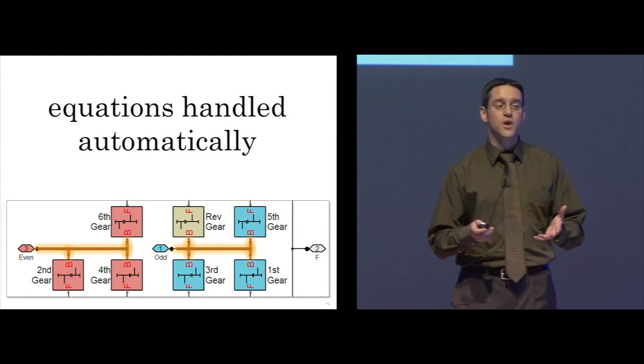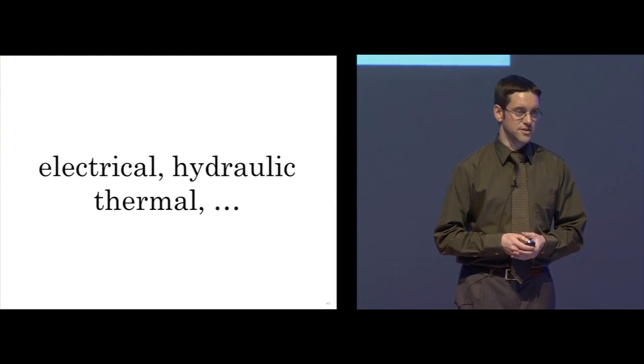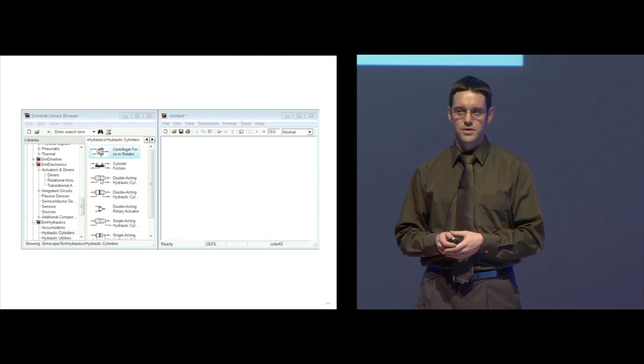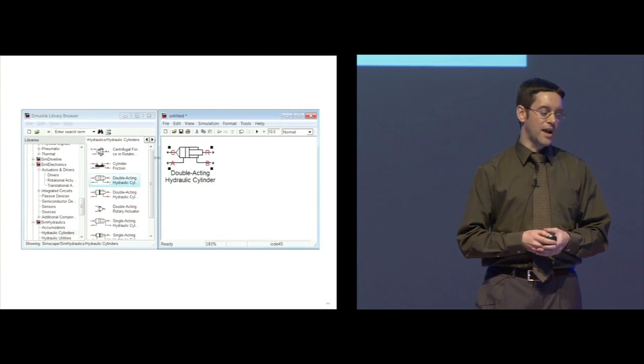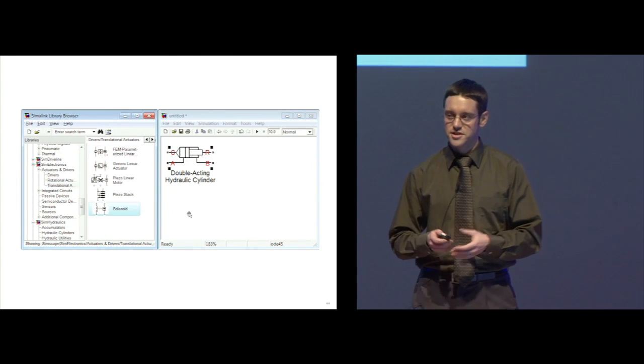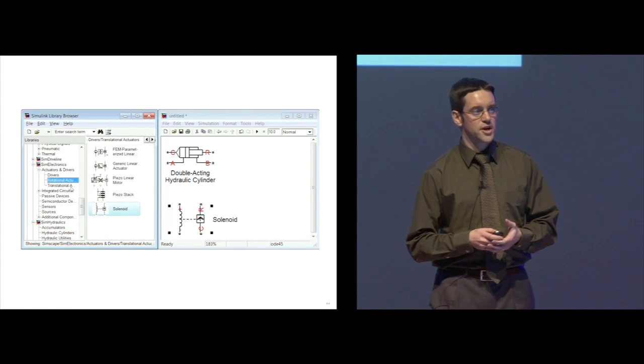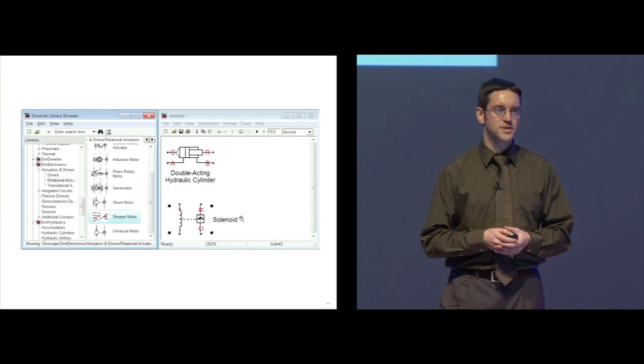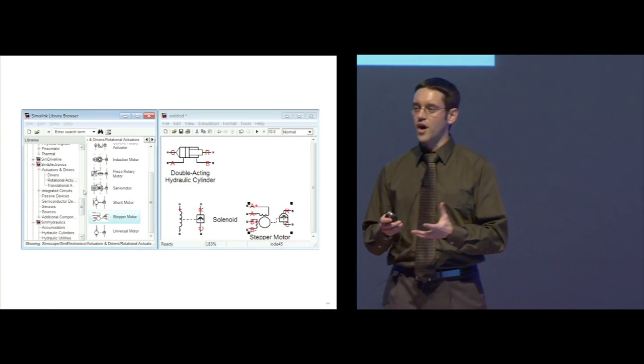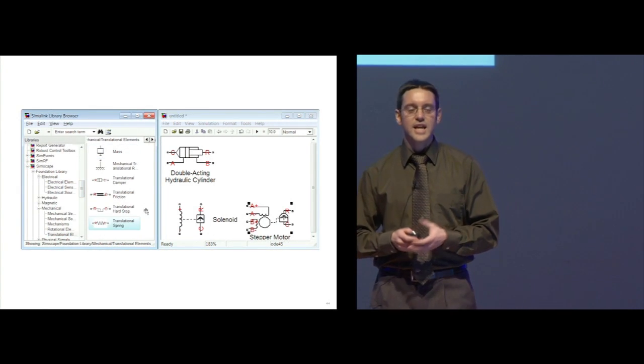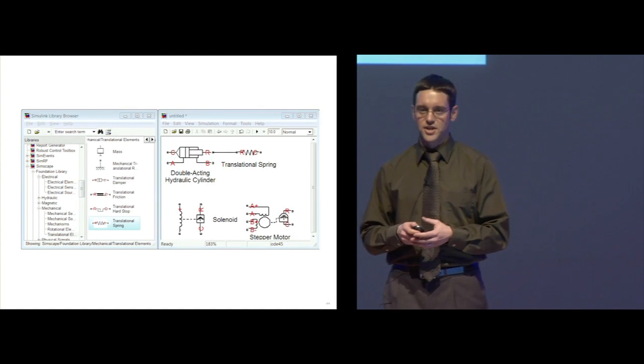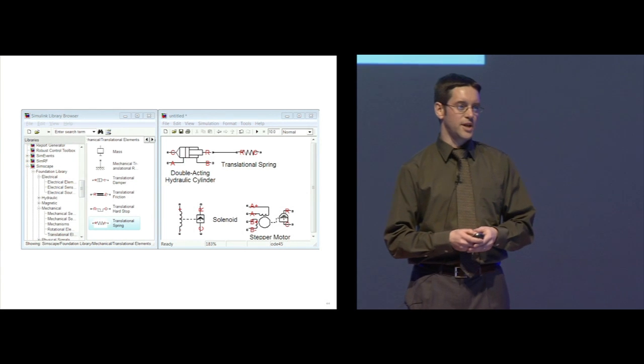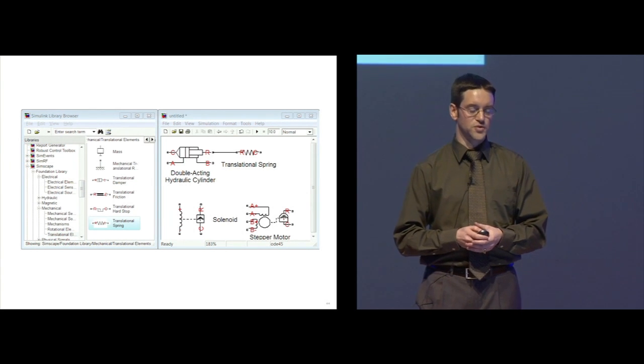I can include other physical domains into my system, such as electrical, hydraulic, and thermal. Taking components from the Simscape libraries, I can add hydraulic actuators for the clutch system, electrical solenoids for the opening and closing of valves, and electric drives for other mechatronic systems. In each case, I simply bring the components into my model, connect them using physical connections, and Simscape will formulate and solve the system level equations for me.